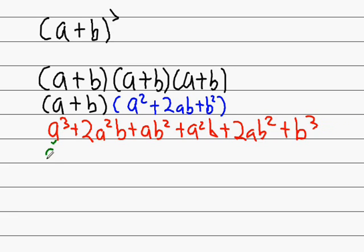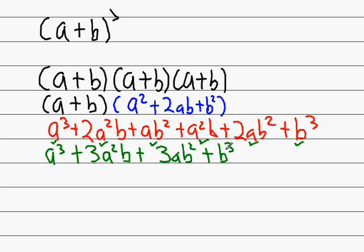I need to now tidy that up. Using that, I have A cubed. Using 2A squared and A squared B, I have 3A squared B. Using AB squared and 2AB squared, I have 3AB squared. And lastly, I have my B cubed. You may have noticed that that is actually the binomial expansion.